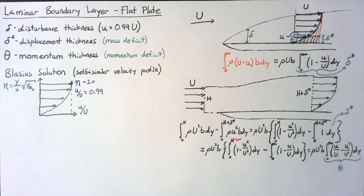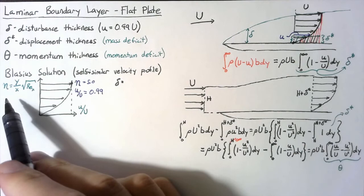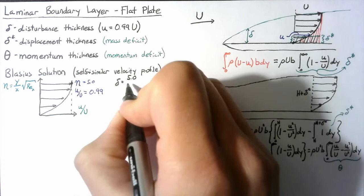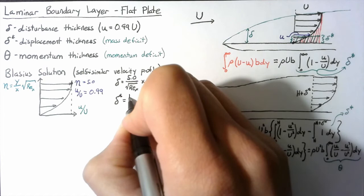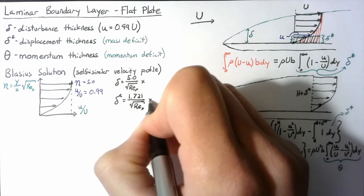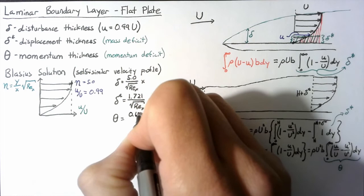The details of this solution are a bit too complicated to write down here, but with this profile we can calculate our three thicknesses at any point. Our disturbance thickness, when eta is equal to 5.0, can be written as 5.0 divided by the square root of the Reynolds number, multiplied by x. The displacement thickness ends up with a value of 1.721, and our momentum thickness has a numerical value of 0.664 — both divided by the square root of the Reynolds number and multiplied by x.